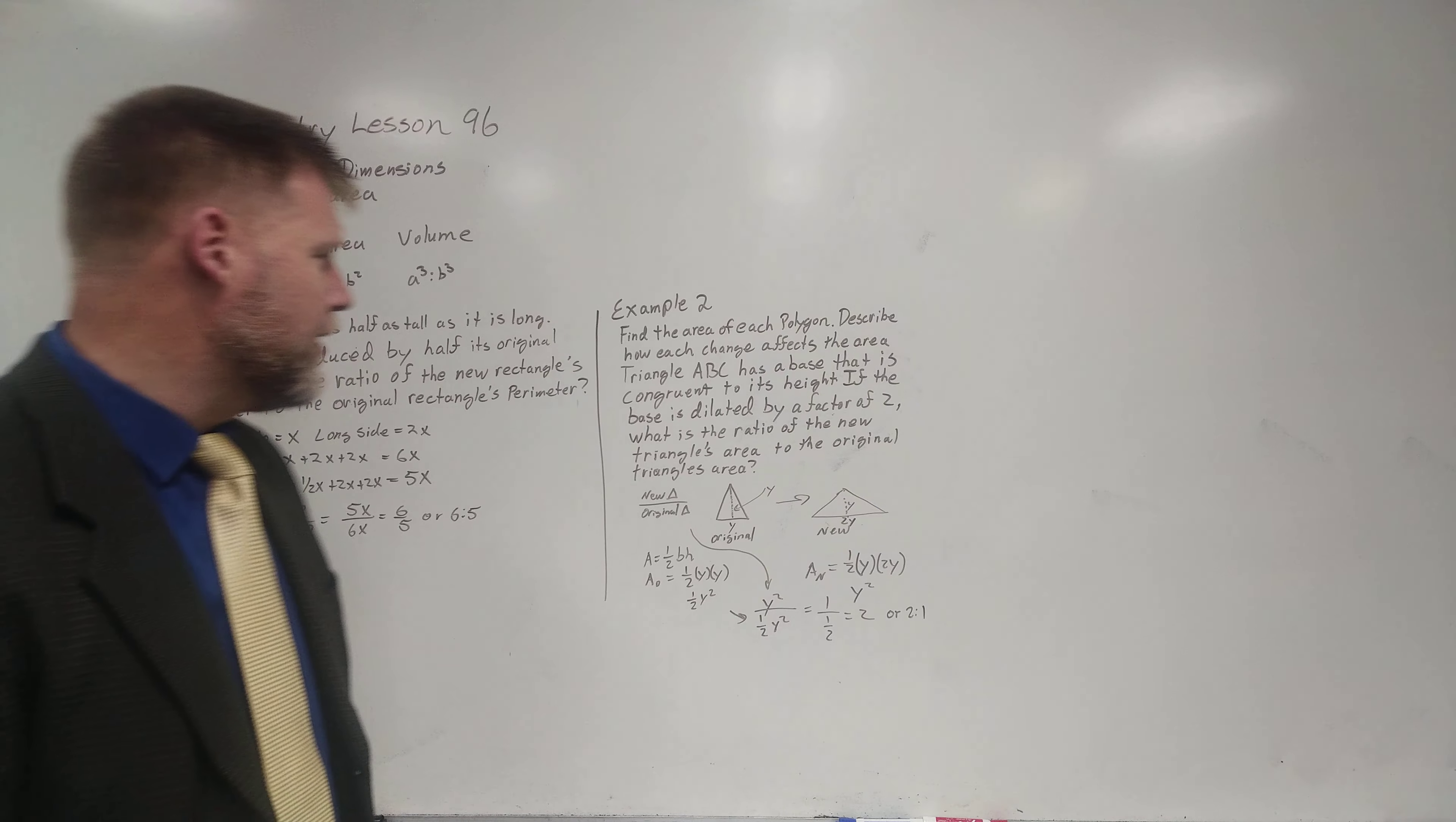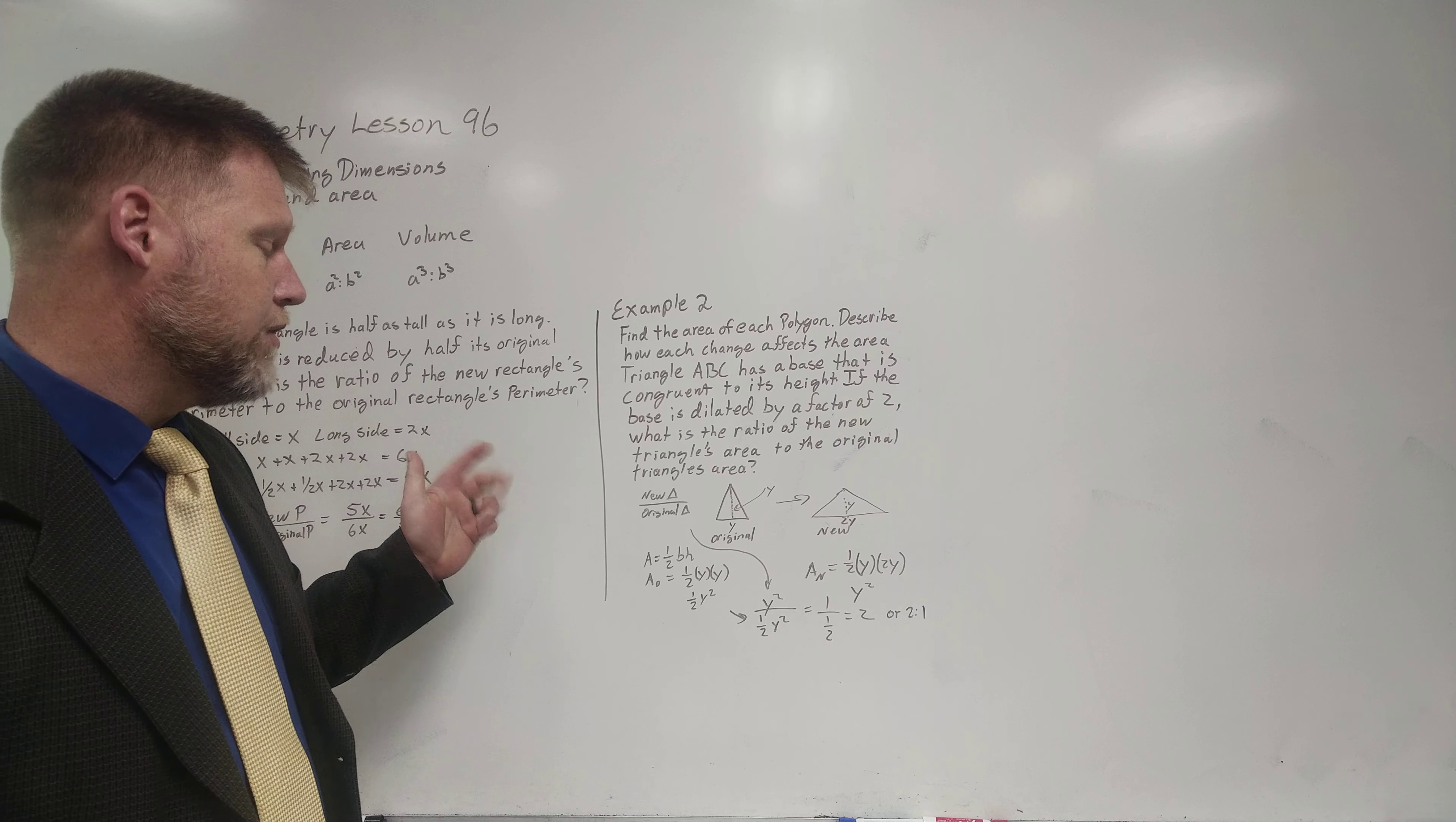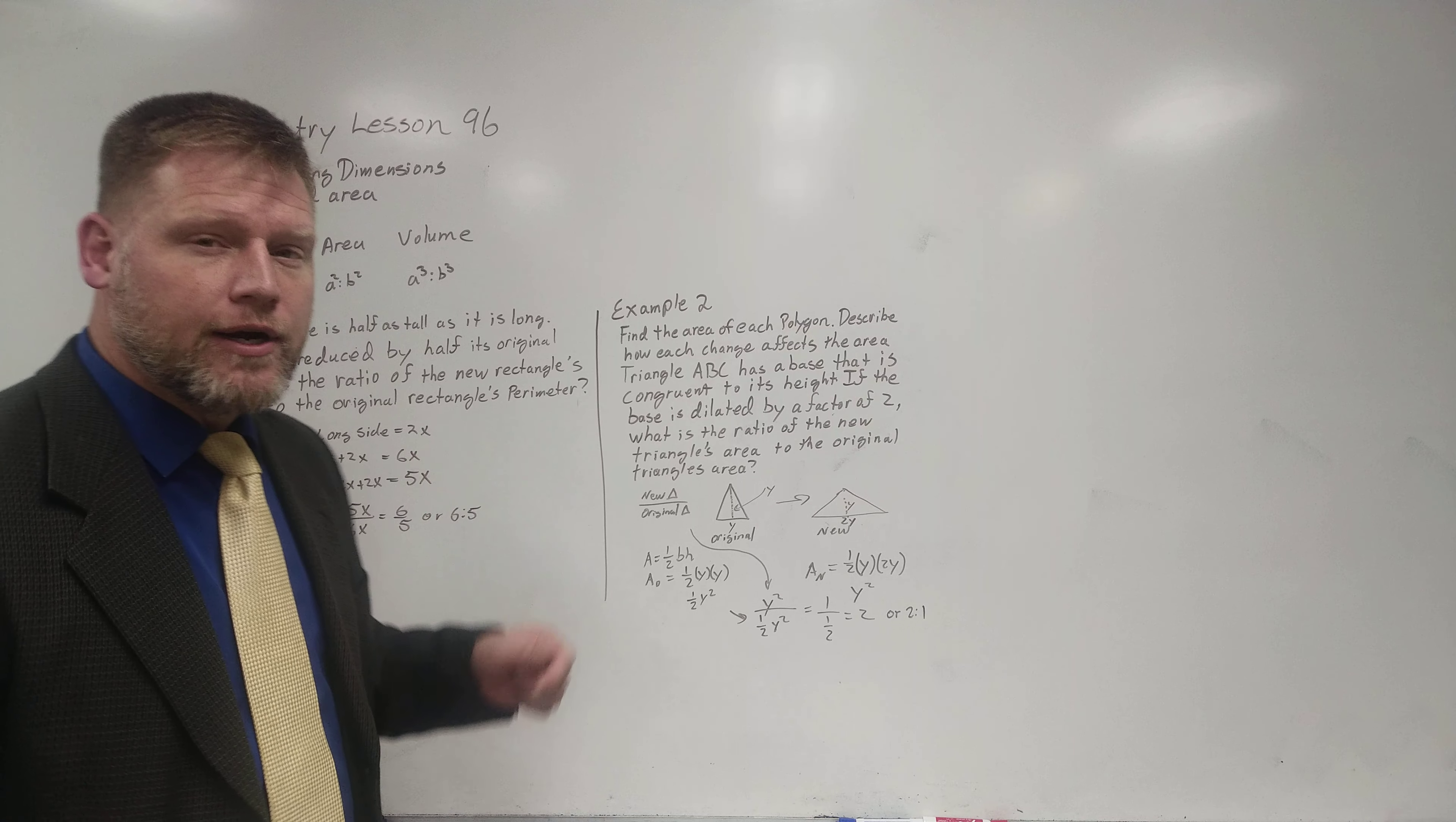Find the area of each polygon. Describe how each change affects the area. Triangle ABC has a base that is congruent to its height. So the base and the height are the same. If the base is dilated by a factor of 2, what is the ratio of the new triangle's area to the original triangle's area?